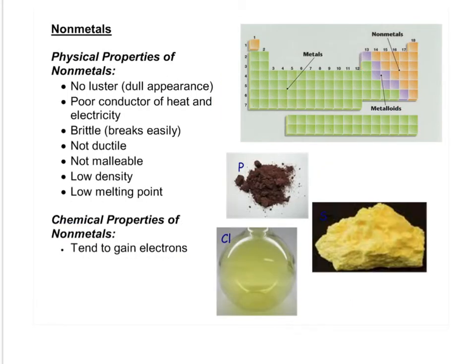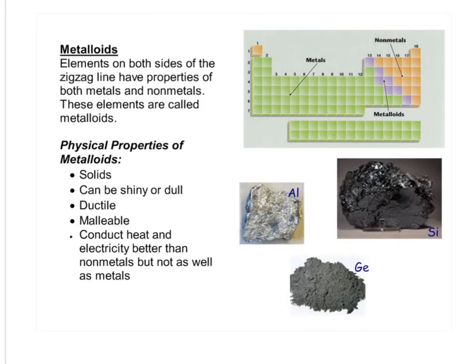Nonmetals are the exact opposite of metals. They have no luster, they don't conduct heat or electricity, you can't shape them into anything, and they gain electrons. Then you have metalloids, and they have properties of both metals and nonmetals.